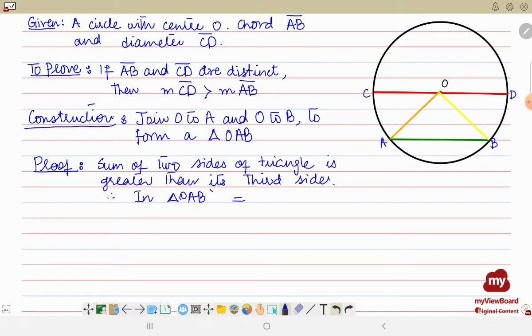So this means in triangle OAB, if we add measure OA plus measure OB, then it will be greater than its third side which is AB, right? Okay, now next thing is if we clearly look, OA and OB are radii.